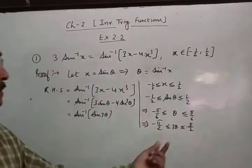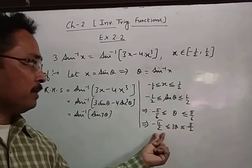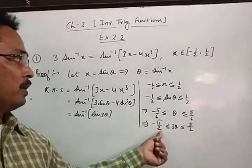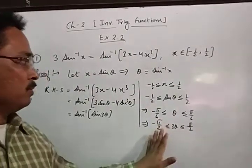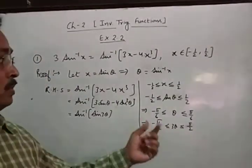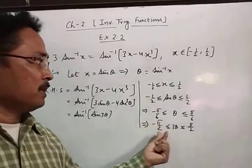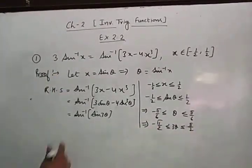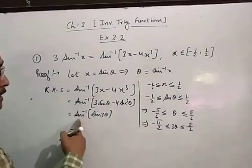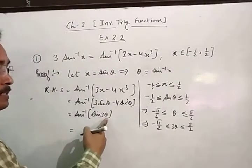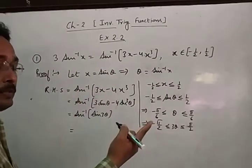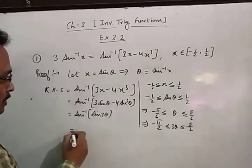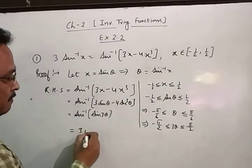Now look here. 3θ will lie between −π/2 and +π/2, including the endpoints. This means 3θ belongs to the closed interval [−π/2, +π/2]. Therefore, we can write sin⁻¹(sin(3θ)) = 3θ, since 3θ belongs to [−π/2, π/2]. Here x is 3θ.